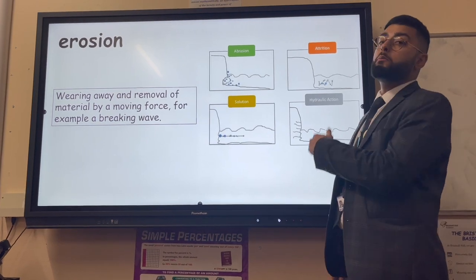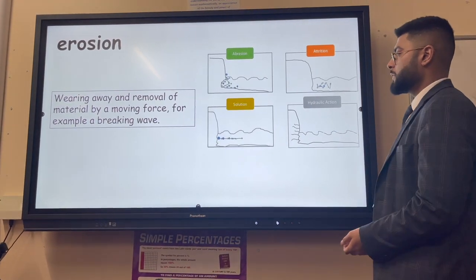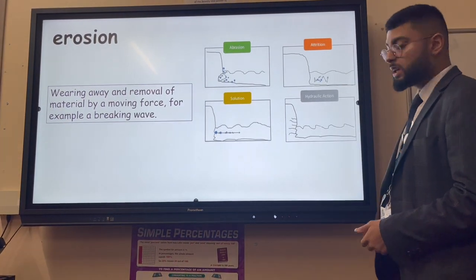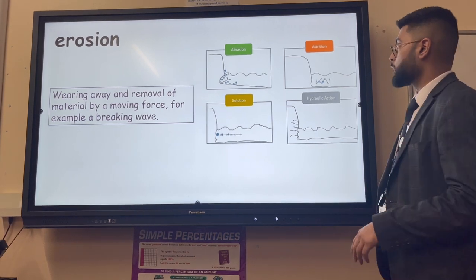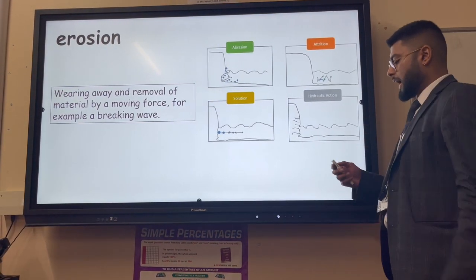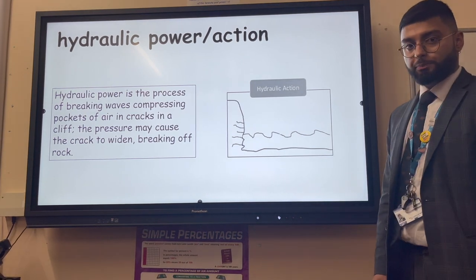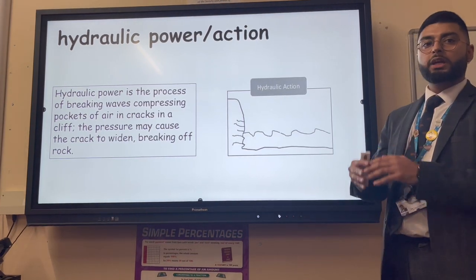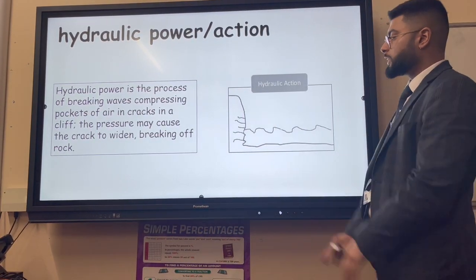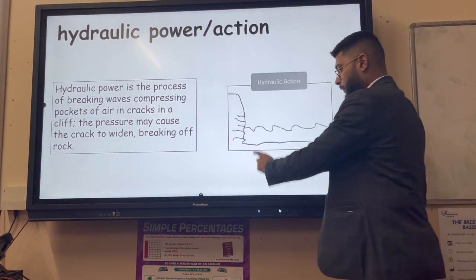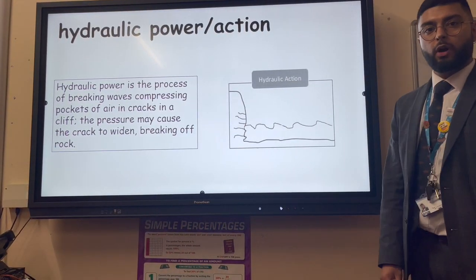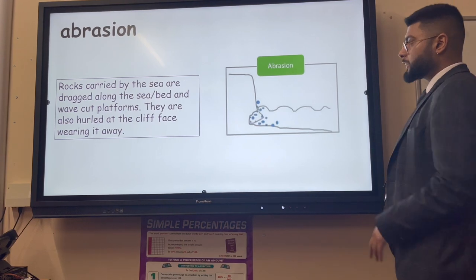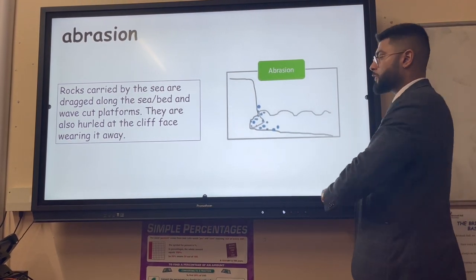Erosion is different to weathering because it is the wearing away and removal of material by a moving force - at the coast that moving force is almost always a wave, probably a destructive wave. We have four types: abrasion, attrition, solution and hydraulic action. Hydraulic action, sometimes called hydraulic power, is the process of breaking waves compressing pockets of air in cracks - the pressure causes cracks to widen and over time the rock breaks. It's the most powerful form of erosion.